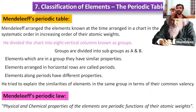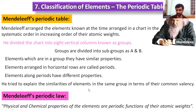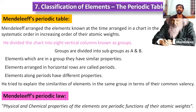He arranged the elements in increasing order of atomic weights, then selected them into horizontal rows or groups based on similarity in their valence. The periodic law states that physical and chemical properties of elements are periodic functions of their atomic weight.